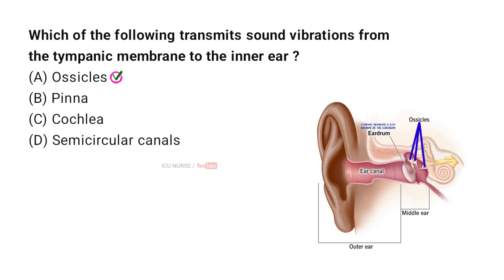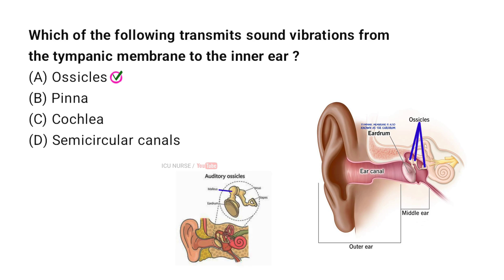The ossicles are the three tiny bones in the middle ear. They help transmit sound vibrations from the tympanic membrane to the inner ear. These bones are called the malleus, incus, and stapes. When sound waves hit the eardrum, it vibrates. These vibrations are passed to the malleus, which is attached to the eardrum.